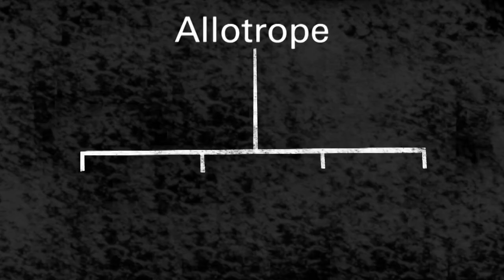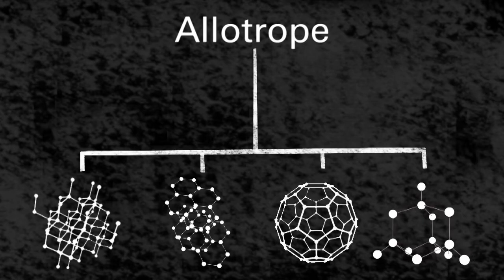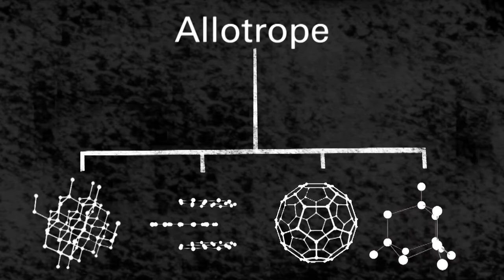An allotrope is simply a different form of the same element, each with distinct physical and chemical properties.